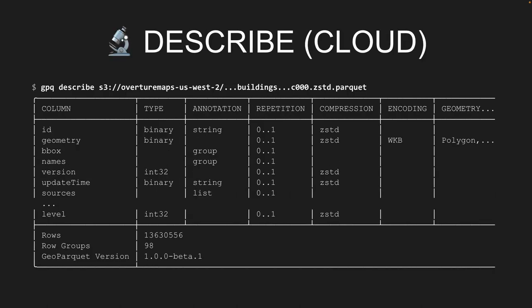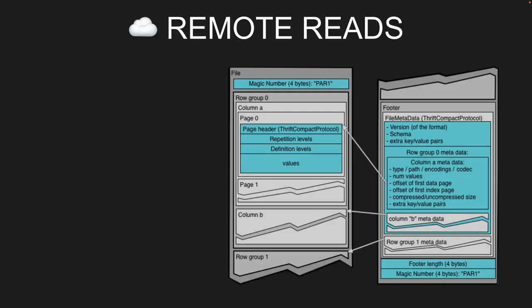If you have a very big file — pointing it at Overture Maps for example — the URL didn't fit in the slide but you can try it yourself: gpq describe some Overture Maps file. That should generate a response in a second or two. Although this is 13 million rows, we can get the metadata information very quickly.